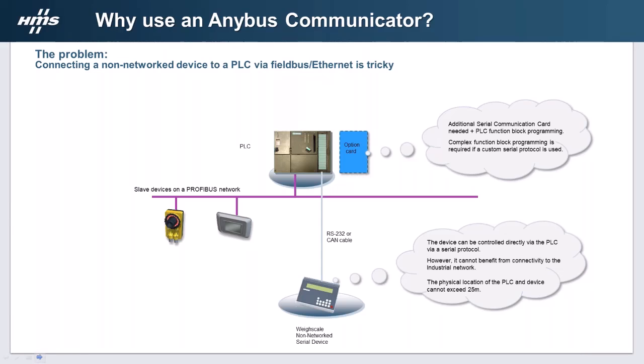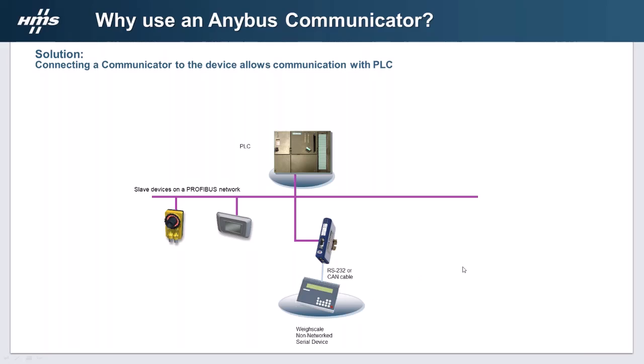So another option — drumroll please — is the Communicator. All it does is take the serial output from that weigh scale and convert it to Profibus so it can sit on the network. As far as the rest of the network is concerned, that weigh scale is on the network — they don't realize there's anything in between; it just looks like it's on the network. So if we go back to that factory owner with a tried-and-tested barcode reader in the corner, all he has to do is add one of these devices for about £400, a few hours of configuration at most, and suddenly he's got that machine up and running again.